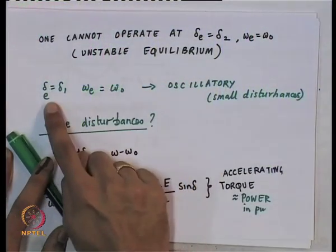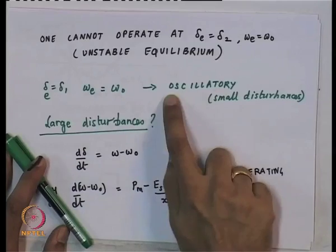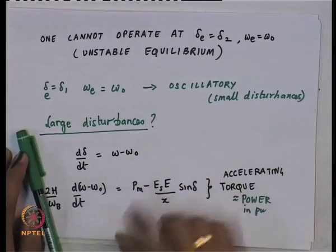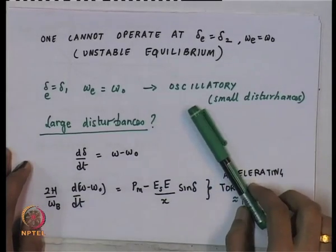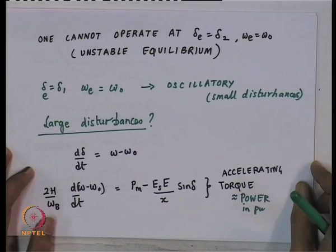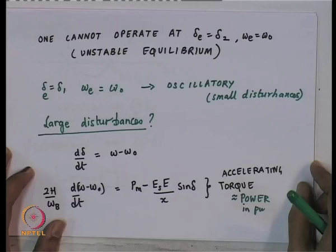For large disturbances, we cannot make the approximation based on delta-omega or delta-delta being small. We cannot assume that the deviation from the equilibrium is small. If the deviation is not small, you cannot assume that sin(delta-delta) approximately equals delta-delta — that is the key approximation used in the linearization. And cos(delta-delta) approximately equal to 1 is also only true for small disturbances.